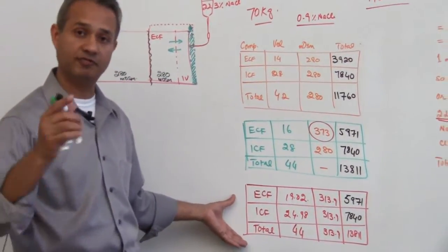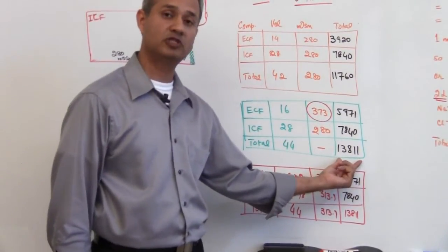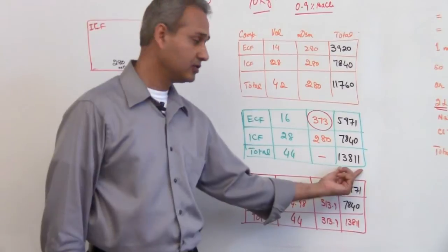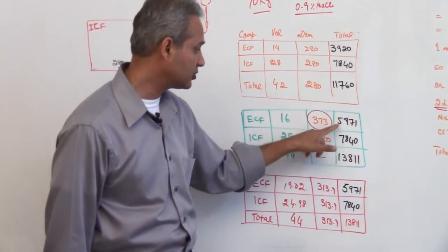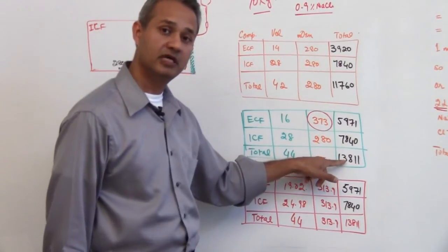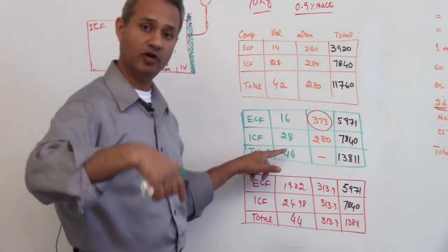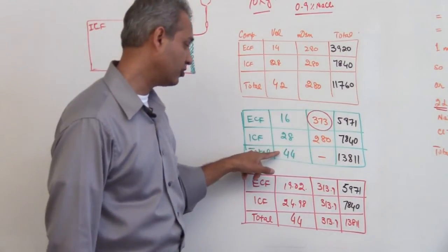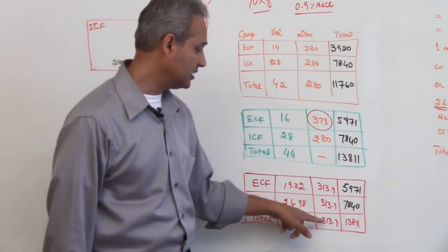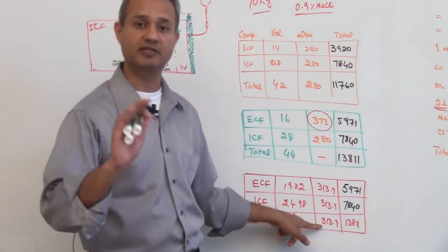What we will do is we will pick up the total milliosmoles present in the body. This is the total number of milliosmoles present combined in ECF and ICF. We will divide that by the total fluid volume - that is 44 - and we got the osmolarity to be 313.9 milliosmoles per liter.